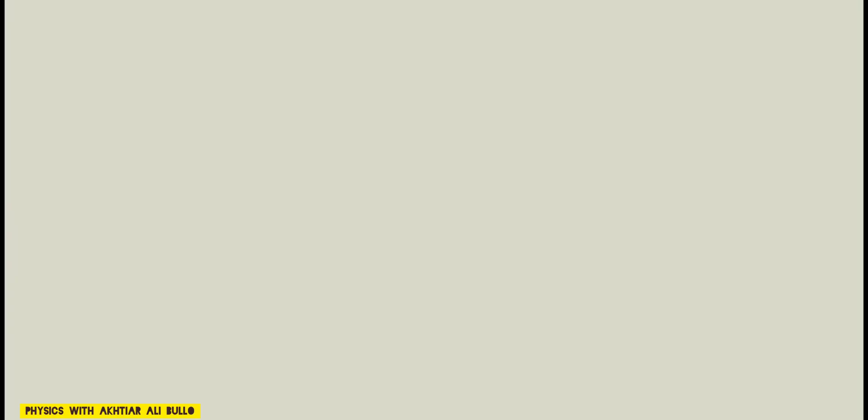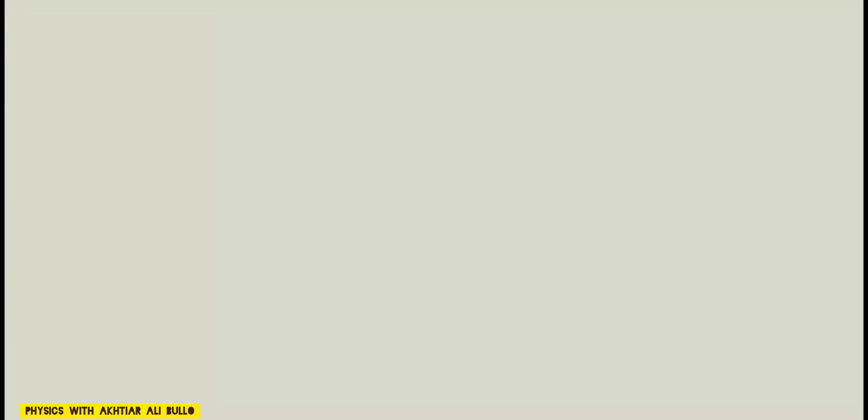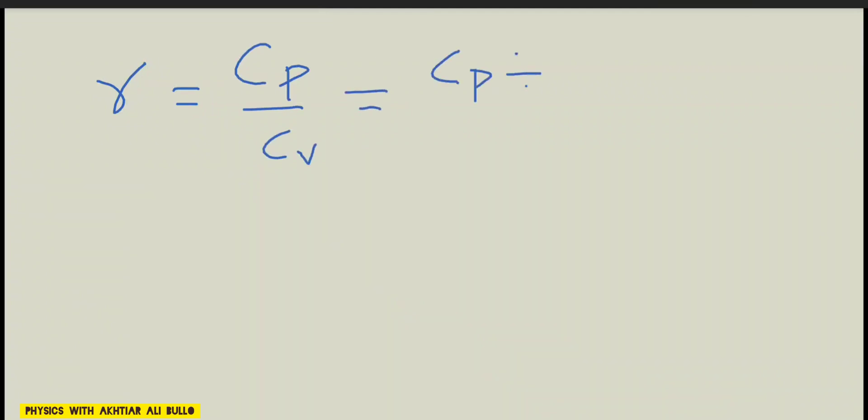We have to calculate the gamma, which means gamma is equal to CP upon CV, or CP divided by CV. As we have obtained CP as 7R upon 2 divided by CV is 5R upon 2.